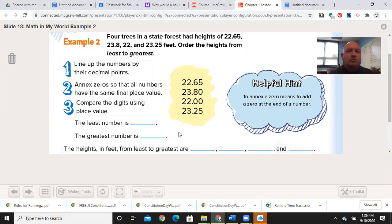So four trees in a state forest have heights of 22.65, 23.8, 22, and 23.25 feet. Order them from least to greatest. I've lined them up. You can see that they annexed a zero here to make it 23.80. They annexed two zeros so it'd be 22.00. They kept the decimals completely lined up. So the least number is - well the twos are all the same, 2, 3. So that's going to eliminate my threes here. So I have 22.6, 22.0. Zero is less than six, so 22 is the smallest.